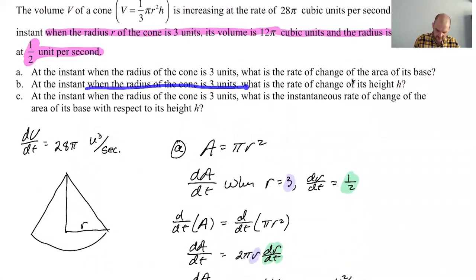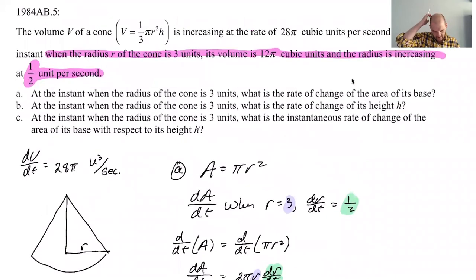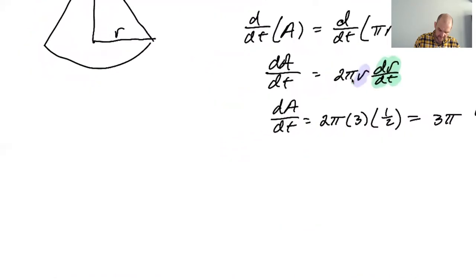All right, at the instant when the radius of the cone is three, what is the rate of change of its height? H. All right, so when the radius is three, what is it? We want to find dH/dt. All right, let me write a couple things here.